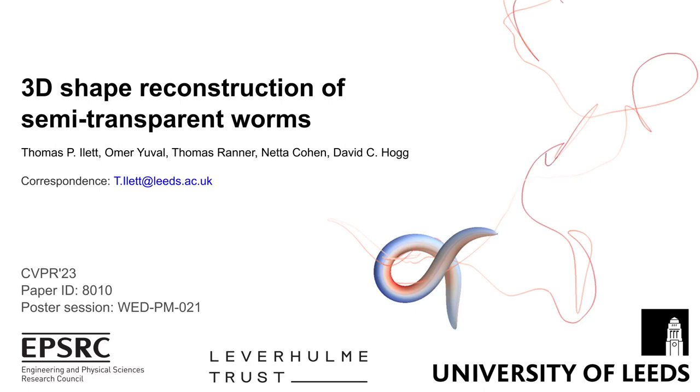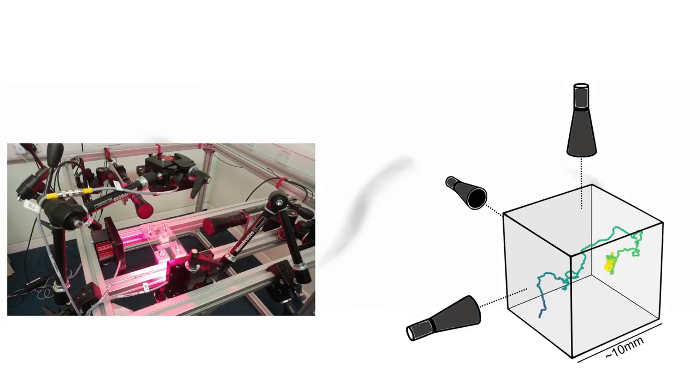3D shape reconstruction typically requires identifying object features or textures in multiple images of a subject. This approach is not viable when the subject is semi-transparent and moving in and out of focus.